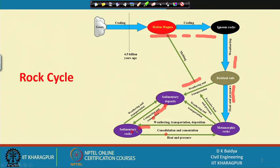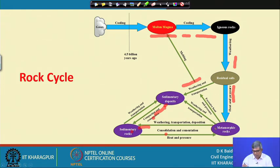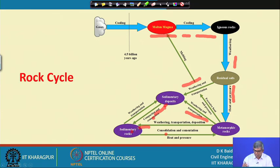If you go deep at any site, you may find igneous rock somewhere, metamorphic rock somewhere, or sedimentary rock somewhere. The metamorphic rock can also directly be weathered and transported to form sedimentary deposits, and then by further compaction and cementation become sedimentary rock. So the cooling of molten magma produces igneous rock, which can transform to metamorphic, and then by weathering and transportation to sedimentary deposits and sedimentary rock, or directly by weathering and transportation to sedimentary rock.